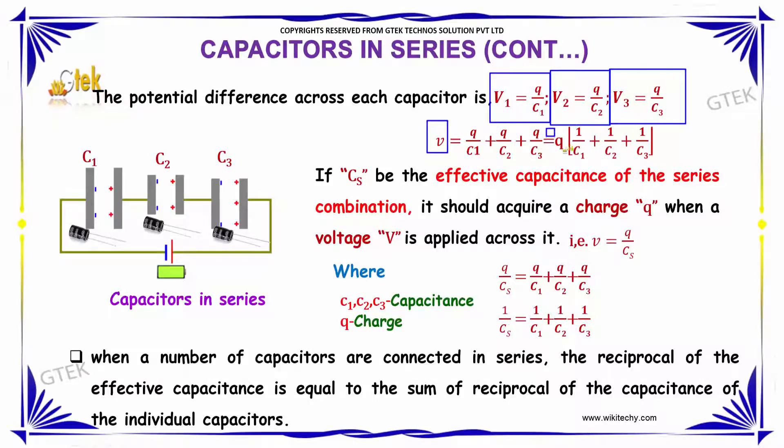We can factor out Q, which is the common term in the numerator. If Cs is the effective capacitance of the series combination,